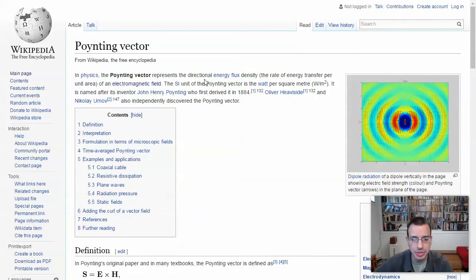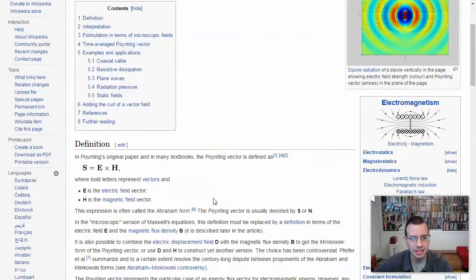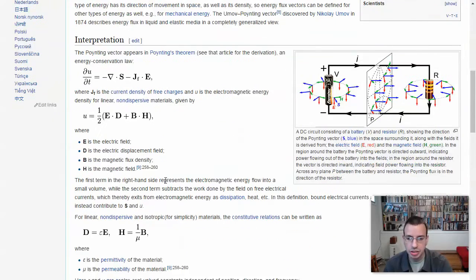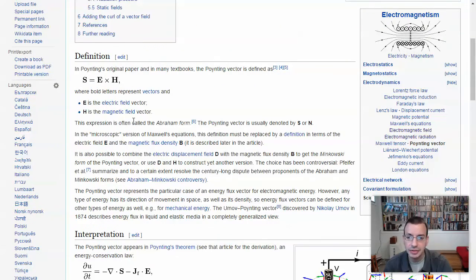So in physics, the Poynting vector represents the directional energy flux density. I wonder why that's not considered intensity. So here we go. S equals e cross h, and h in this case is magnetic field.